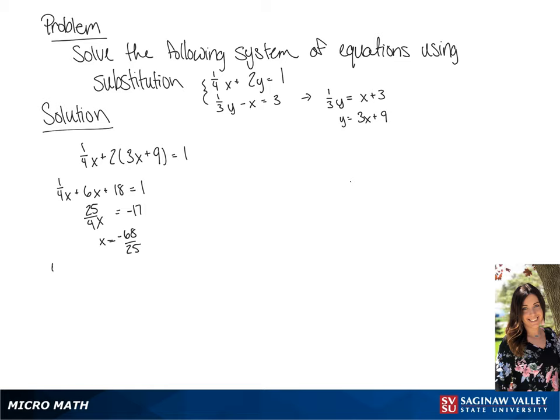And we're going to plug the negative 68 over 25 in the first equation. And this will give us negative 68 over 100 plus 2y equals 1. We're going to add the negative 68 over 100 to both sides.